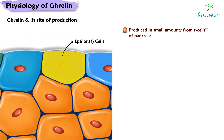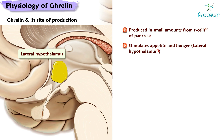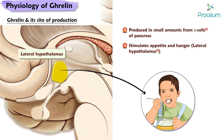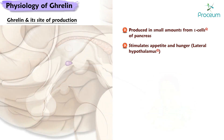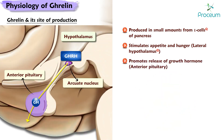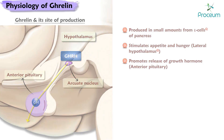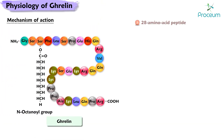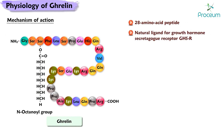Ghrelin is also produced in small amounts from the epsilon cells of the pancreas. It stimulates appetite and hunger by its action on the lateral hypothalamus, and it promotes the release of growth hormone through its action on the anterior pituitary. Ghrelin is a 28 amino acid peptide that is the natural ligand for the growth hormone secretagogue receptor, the GHSR.